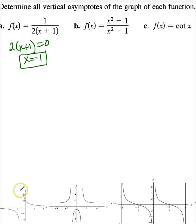And here is the graph, and lo and behold, that, as a matter of fact, is exactly what we see. You have a vertical asymptote at x equals negative 1.